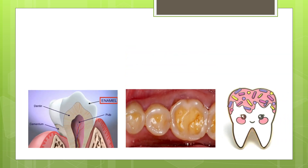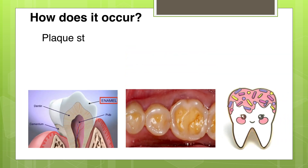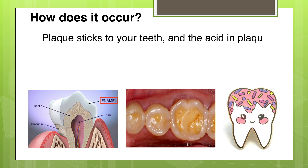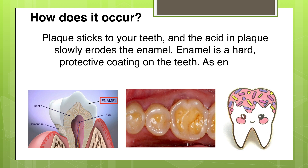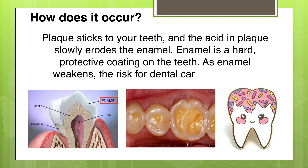How Does It Occur? Plaque sticks to your teeth and the acid in plaque slowly erodes the enamel. Enamel is a hard protective coating on the teeth. As enamel weakens, the risk for dental caries increases.